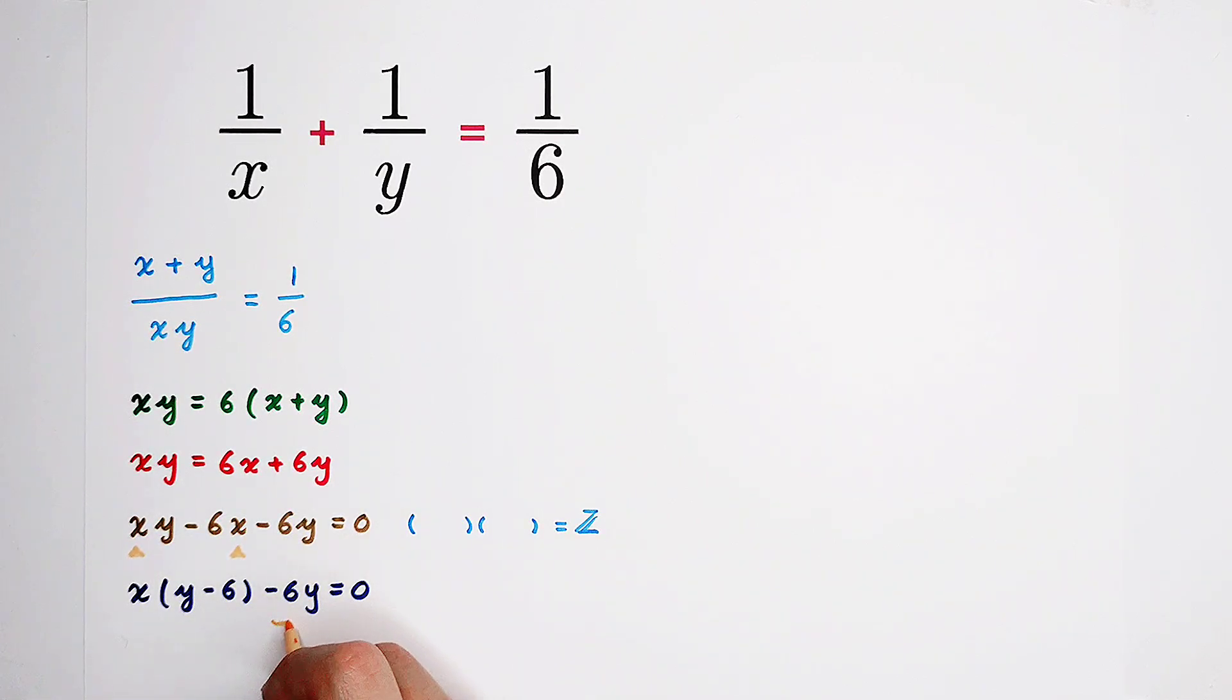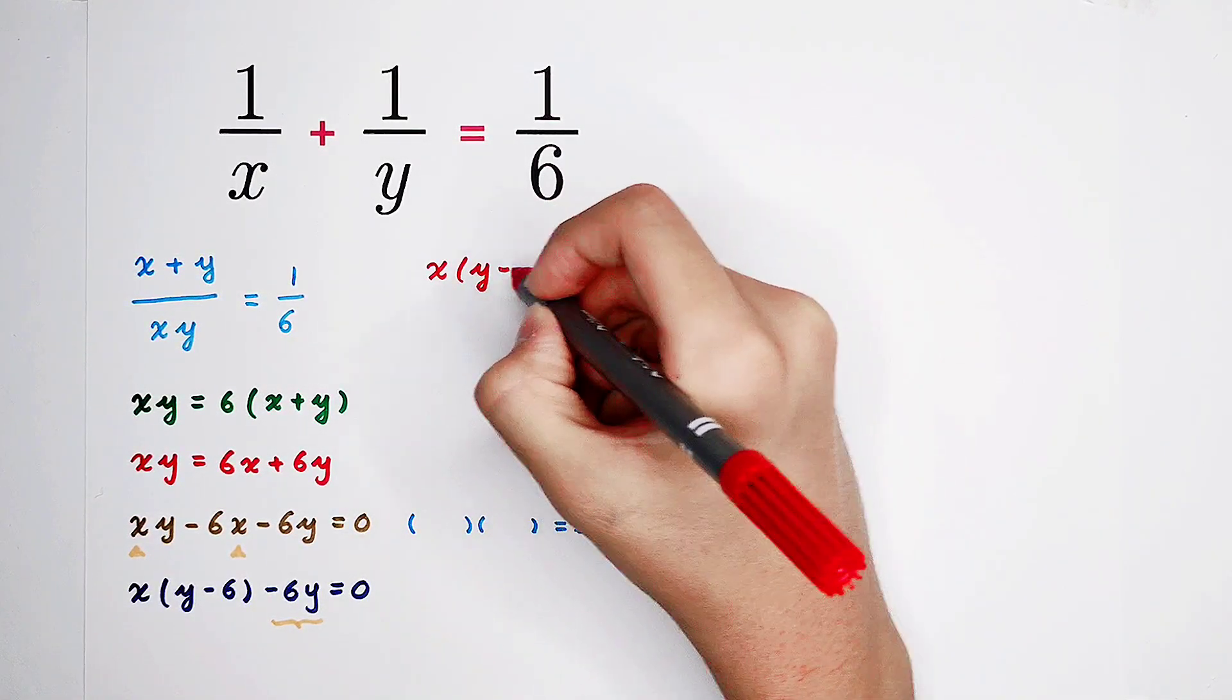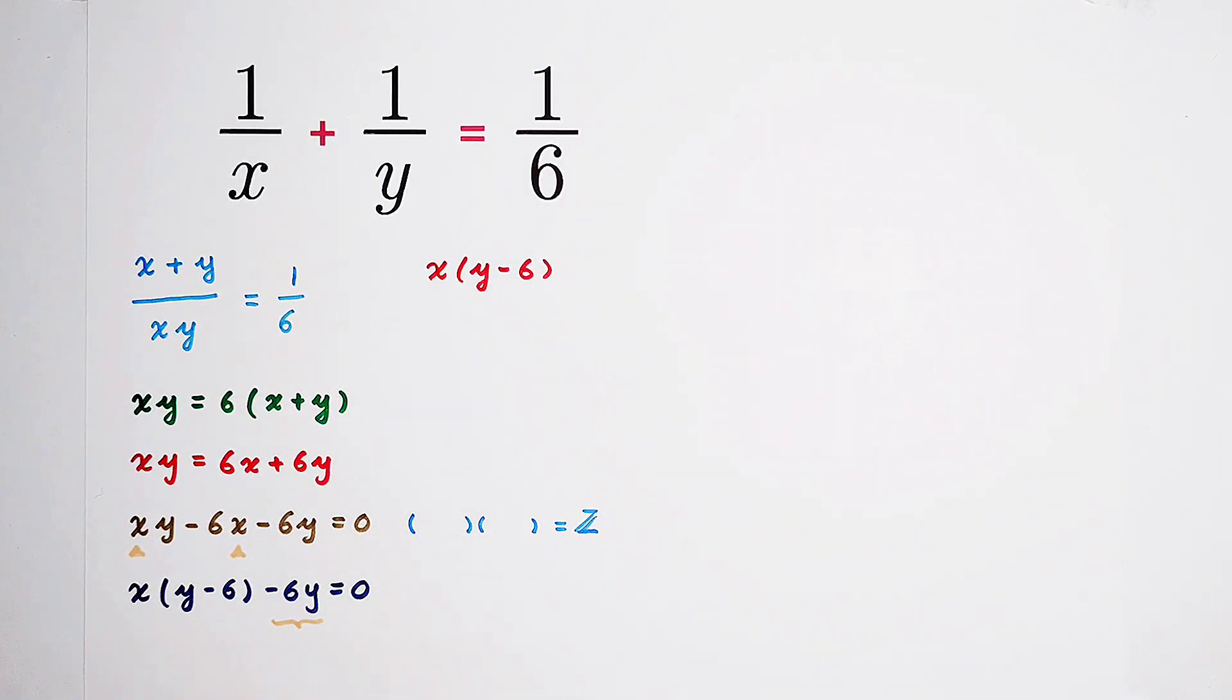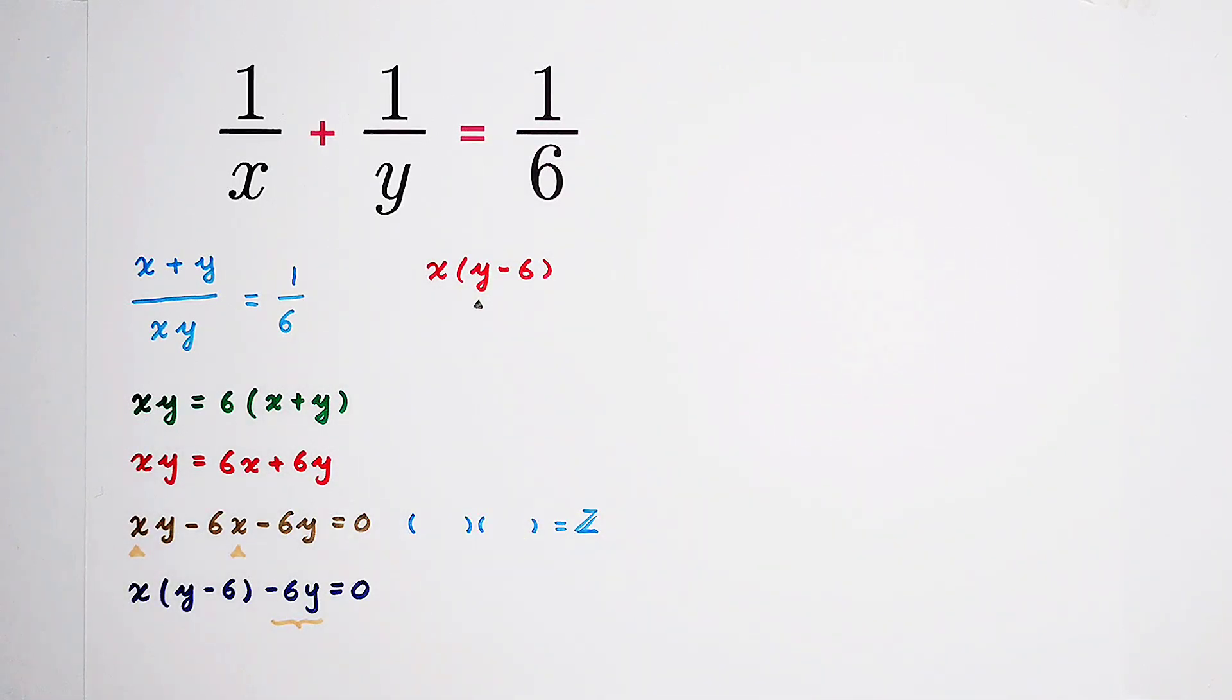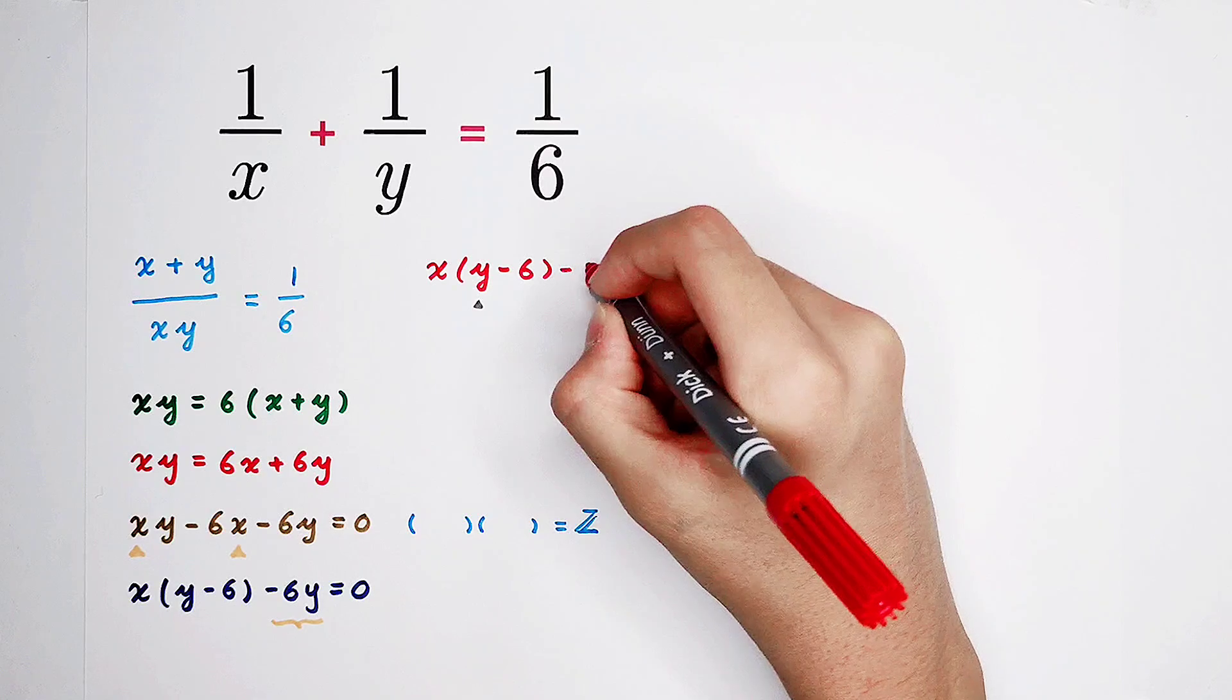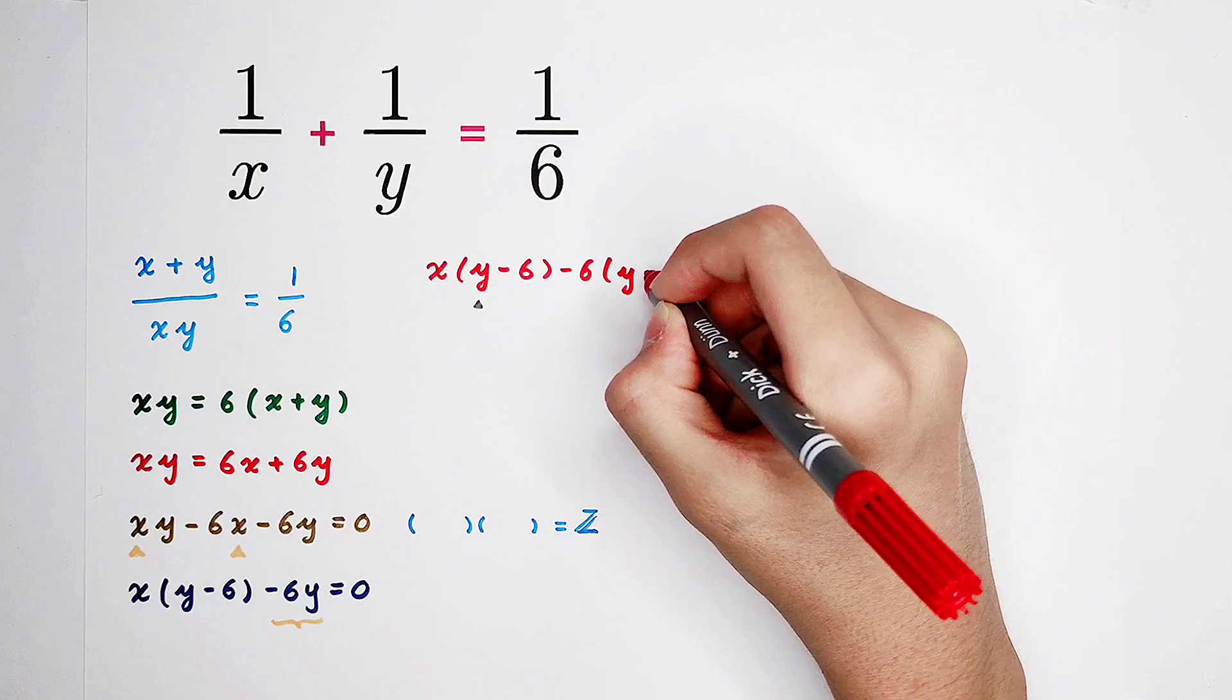Because here is no more x. So we wish that here would appear a y minus 6. The coefficient of this y in the bracket is 1. But here we have a negative 6. So now, I'd like to take out a negative 6 from here.